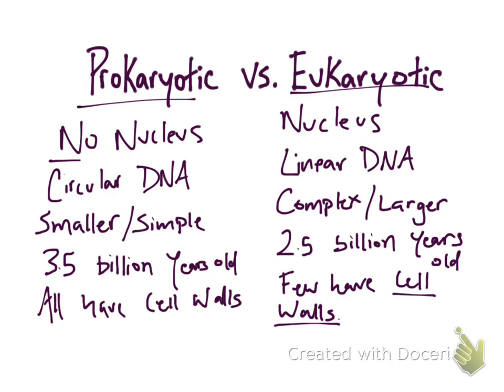Some examples of eukaryotic cells are the plant and animal cell. For the prokaryotic, pretty much all prokaryotic cells are bacteria. There are a few protists and fungi within the prokaryotic cells, but most of it consists of bacteria.